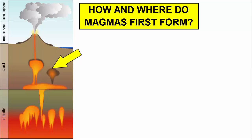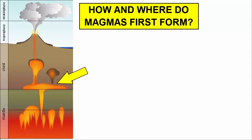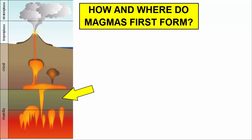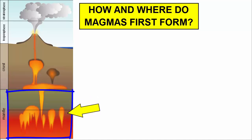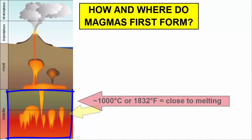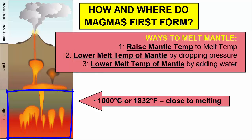Let's descend below the surface to the place where the magmas first form. We will pass through the crust, riddled with plutons, across the border between the crust and mantle, and into the underlying mantle. Here is where the magmas first form. What is happening here to make the rock melt? The mantle that sits under the crust is very hot, around 1000 degrees Celsius or 1832 degrees Fahrenheit, which is very close to its melting temperature. To melt it partially, we either raise the mantle temperature, or we find a way to lower the melting temperature of the rock.